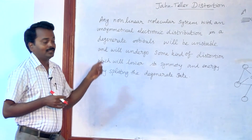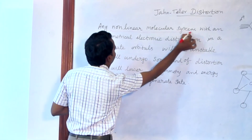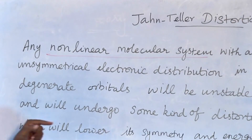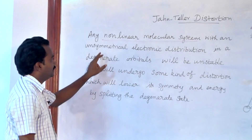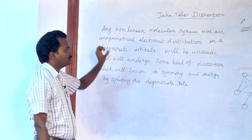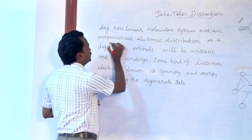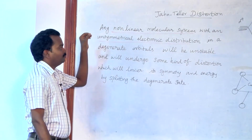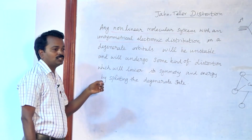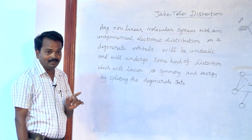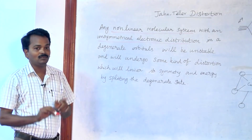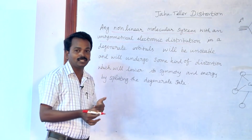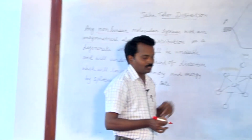Likewise, in any non-linear molecular system, if the electronic distribution follows an unsymmetrical manner, then that non-linear system will not remain as a perfect non-linear system — instead it will undergo some distortion.